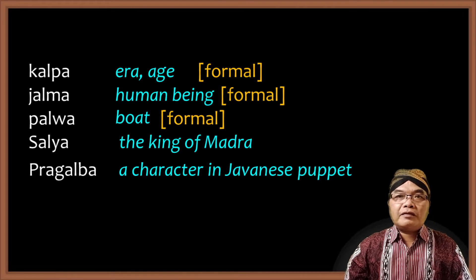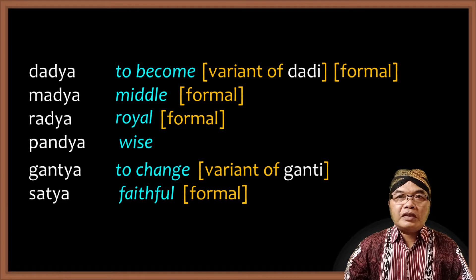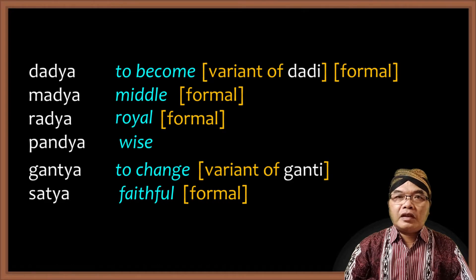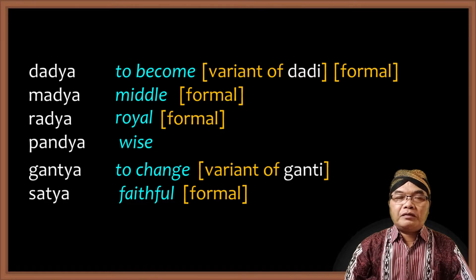Alright, the next is the final syllable TIO or TIO. There are only a very limited number of words with this TIO ending, but the penultimate syllable is pronounced A. For example: TATIO, MATIO, RATIO, PANTIO, GANTIO, SATIO.